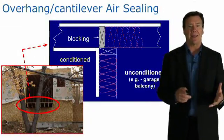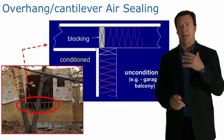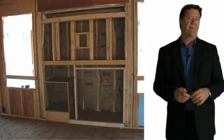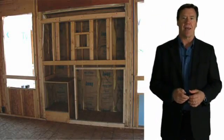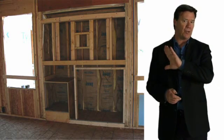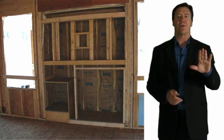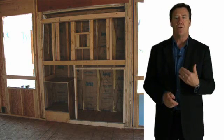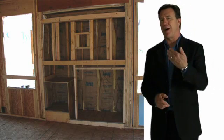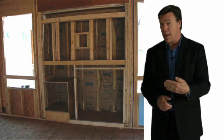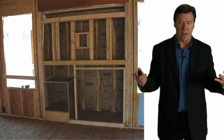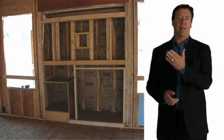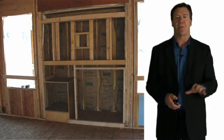Duct penetrations must be foamed and sealed. Cantilever and rim-joist areas need to be air-sealed. For fireplaces, even though gypsum wallboard will cover the location, there's often a lot of hollow space behind it with insulation exposed to air — that cannot be the case. You have to completely put an air barrier around that entire space.